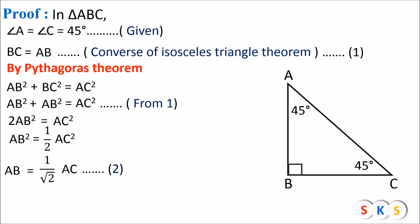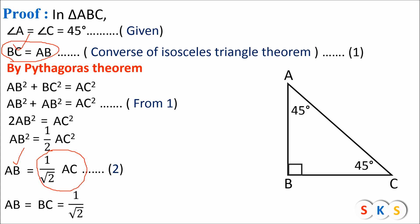Now looking at equation number 1, BC and AB are equal. Since AB equals 1 upon root 2 times AC, BC will also equal 1 upon root 2 times AC. Therefore AB equals BC equals 1 upon root 2 times AC. This proves that the side containing the right angle is 1 upon root 2 times the hypotenuse.